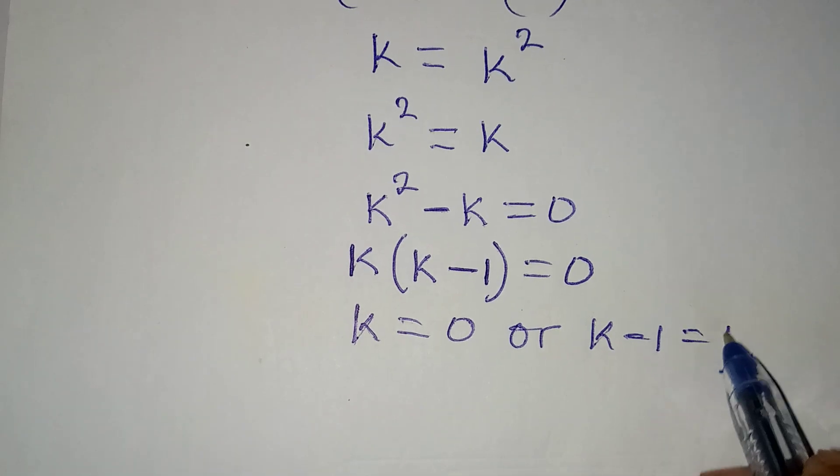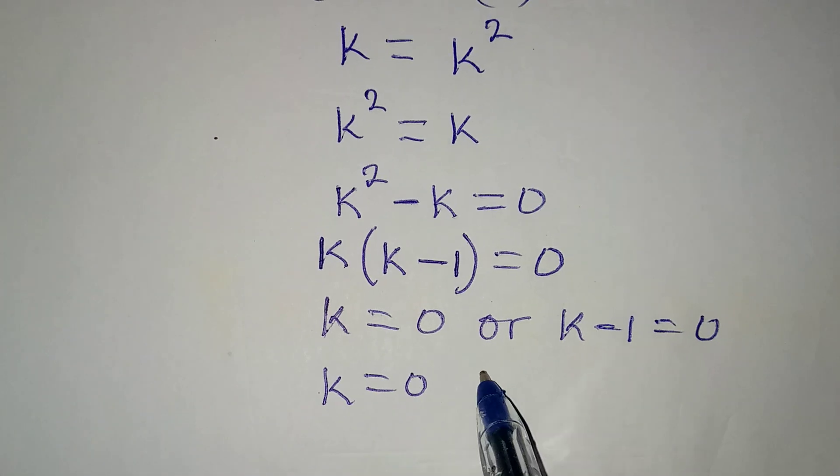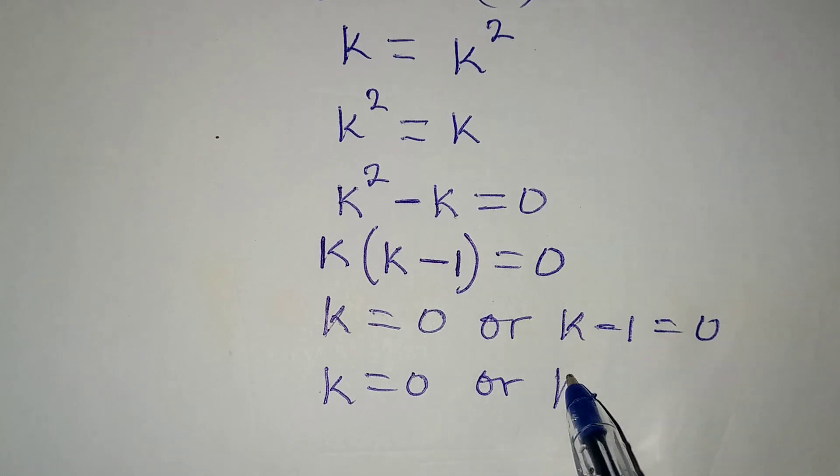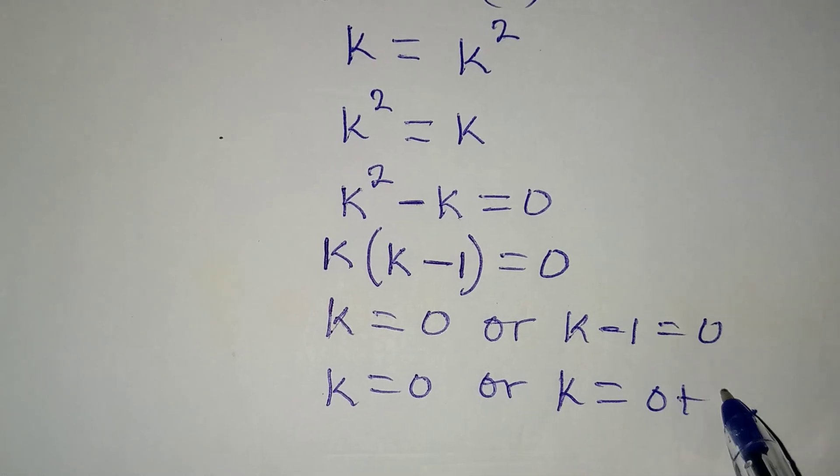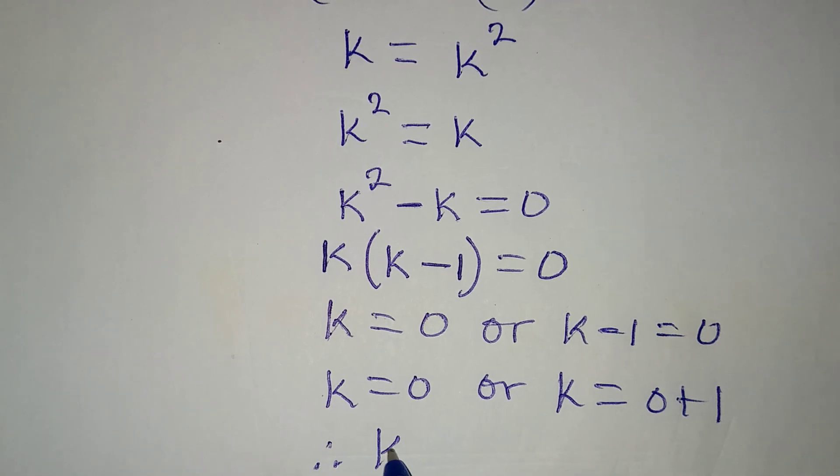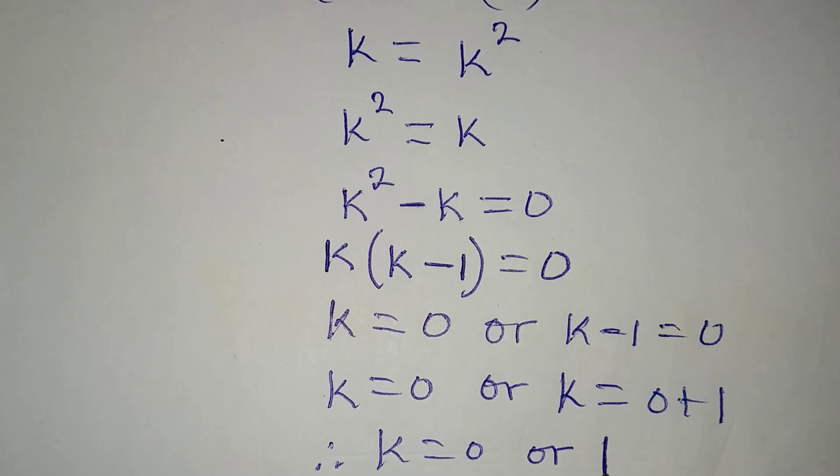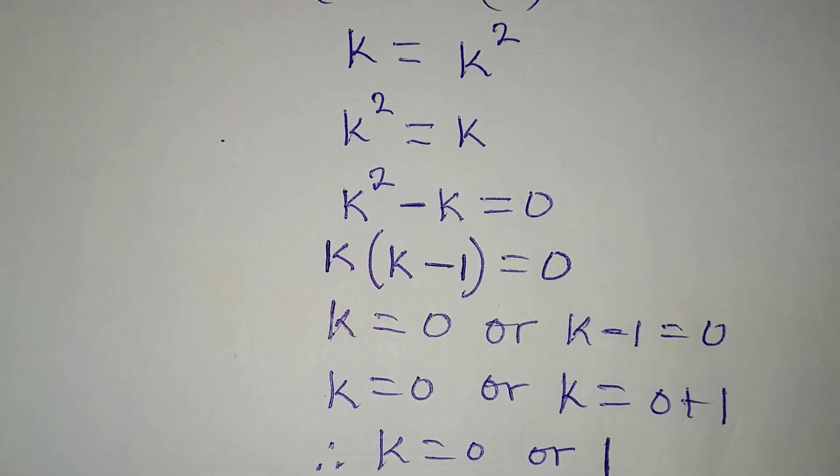So k will be equated to zero, or k minus one is equal to zero, and then from here k remains zero or k is equal to zero plus one. So therefore we are concluding that k is equal to zero or plus one.